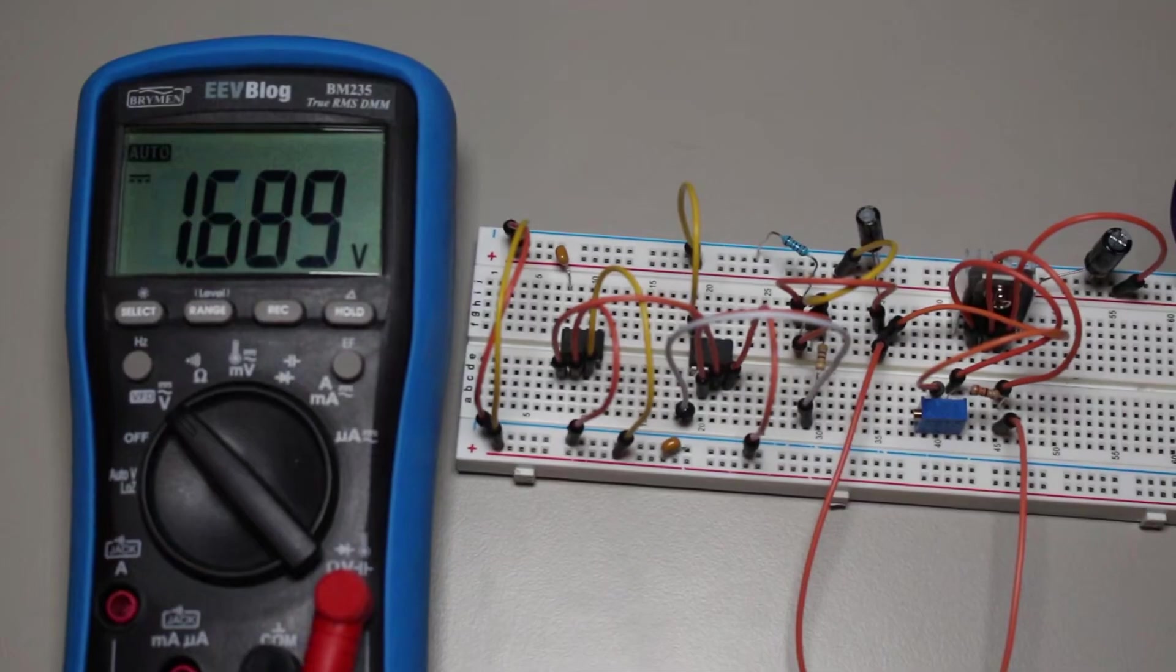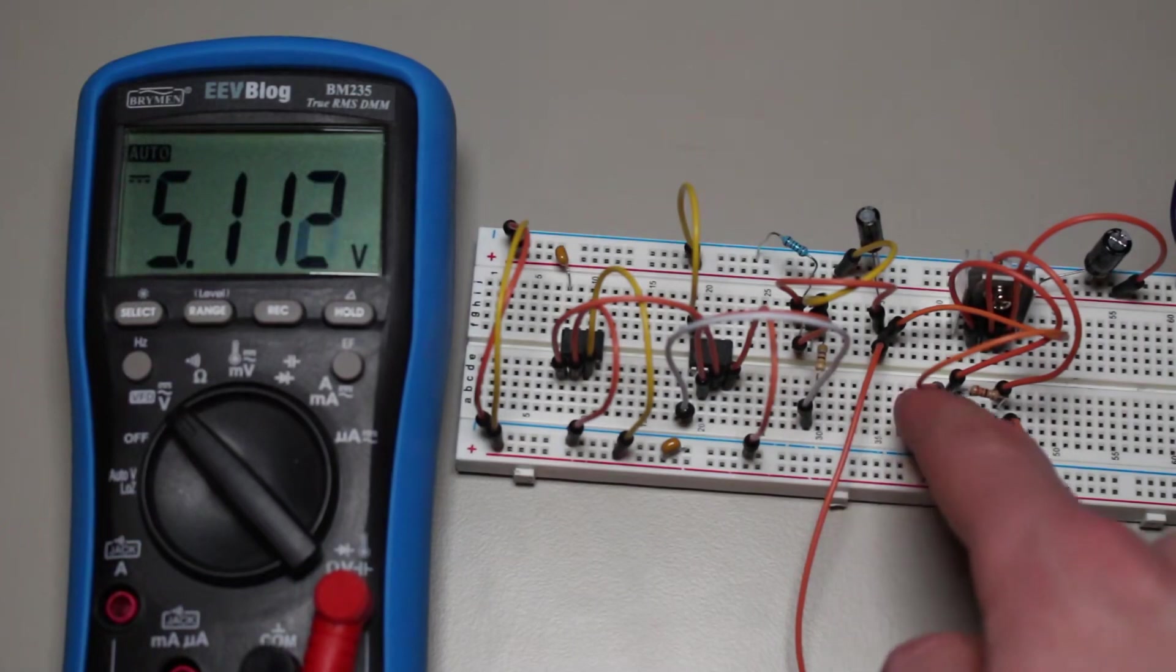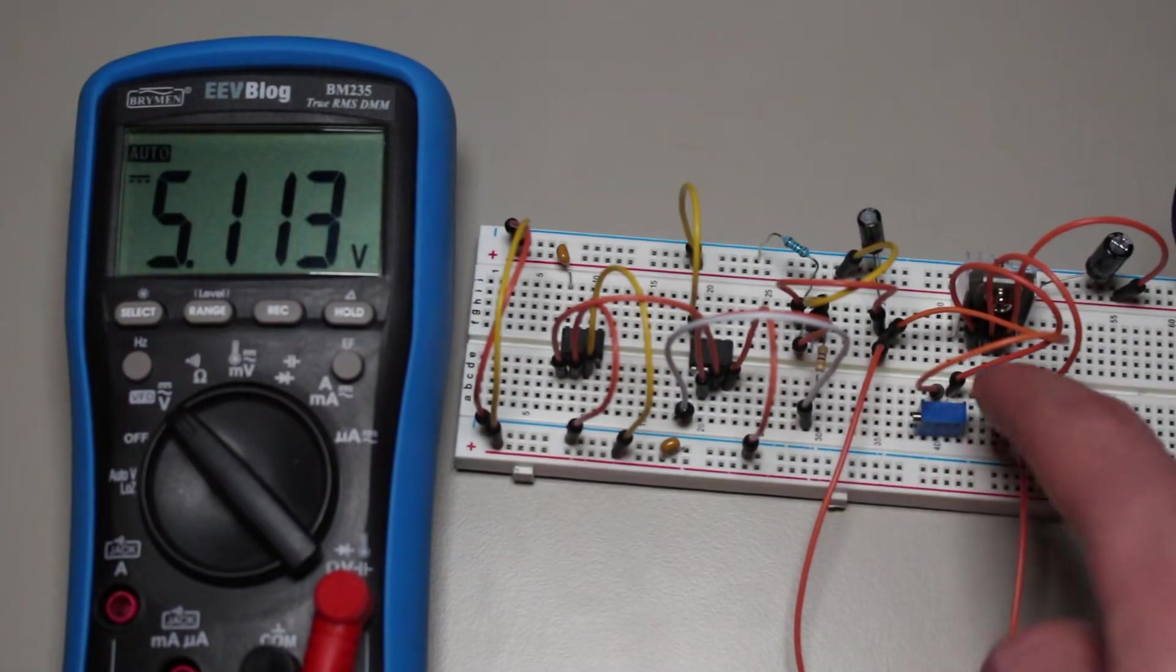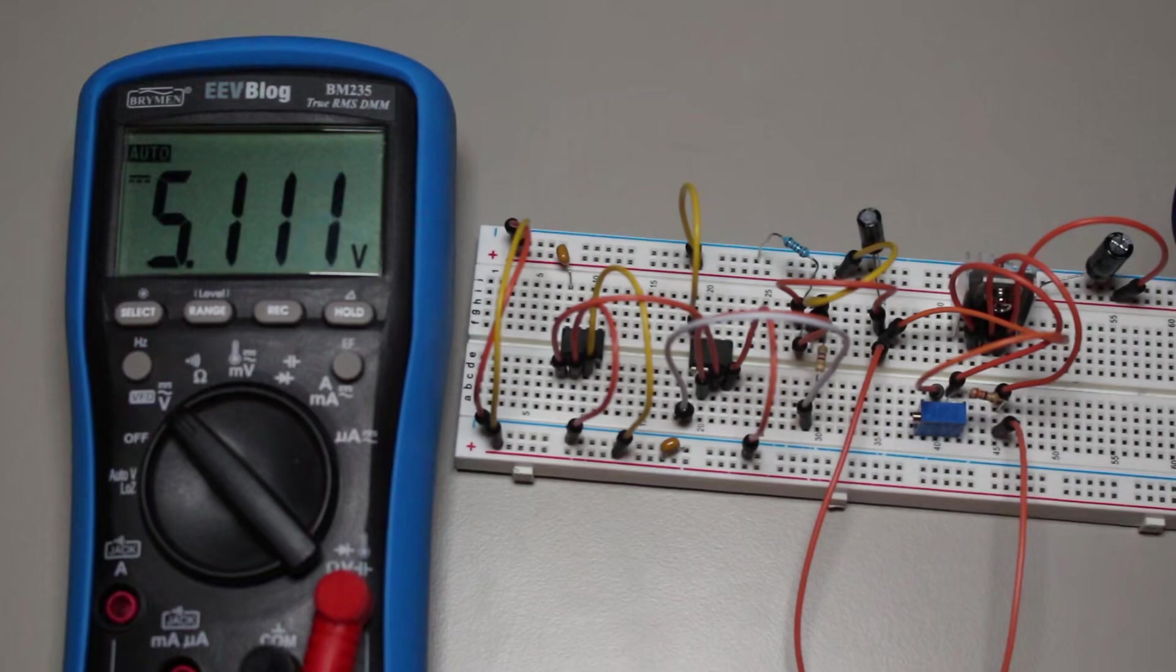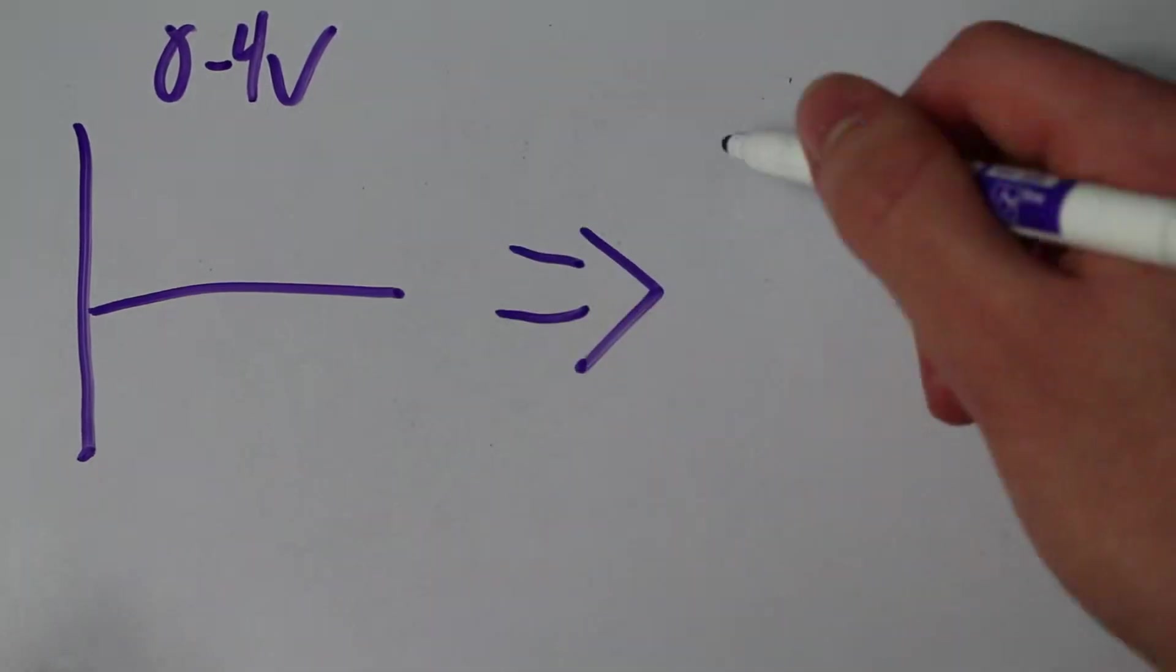Anyways, this new 5 volt source is relative to the new virtual ground that we just created. Now that we have our positive and negative 12 volt supplies, we can start working on translating the 0 to 4 volt DC signal from the DAC to a negative 2 to 2 volt AC signal.